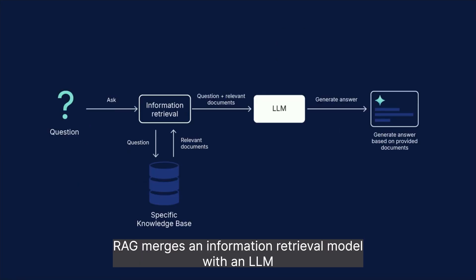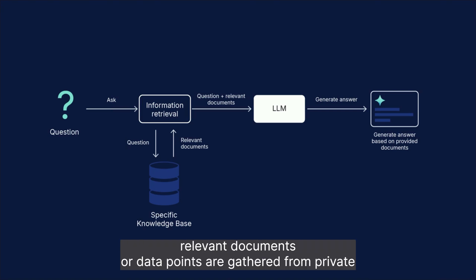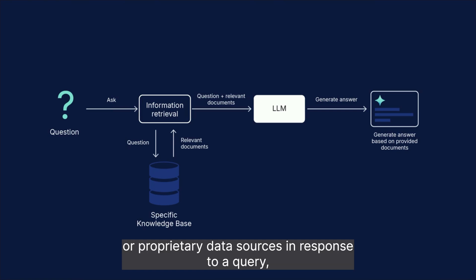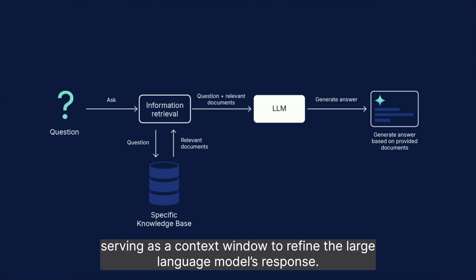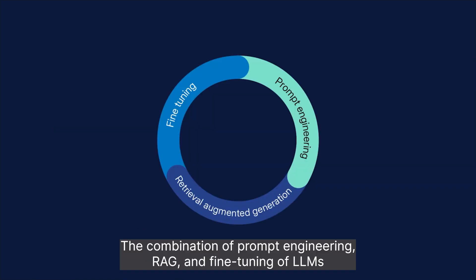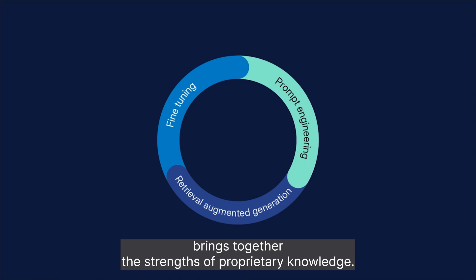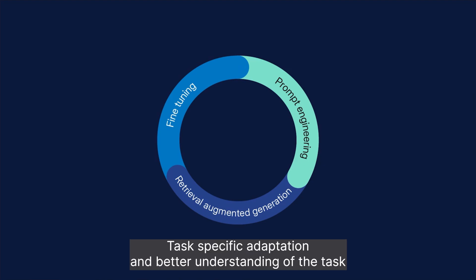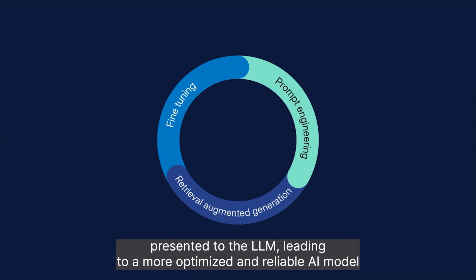RAG merges an information retrieval model with an LLM. Relevant documents or data points are gathered from private or proprietary data sources in response to a query, serving as a context window to refine the large language model's response. The combination of prompt engineering, RAG, and fine-tuning brings together the strength of preparatory knowledge, task-specific adaptation, and better understanding of the task, leading to a more optimized and reliable AI model.